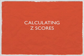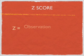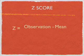In this podcast, I'm going to talk about calculating Z-scores. Z-score: Z is equal to the observation in question minus the mean divided by the standard deviation.